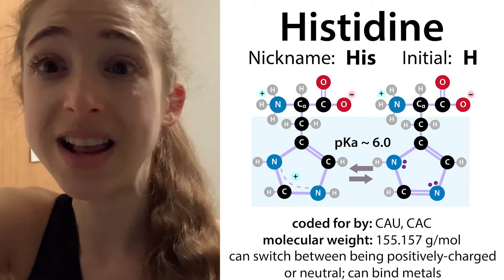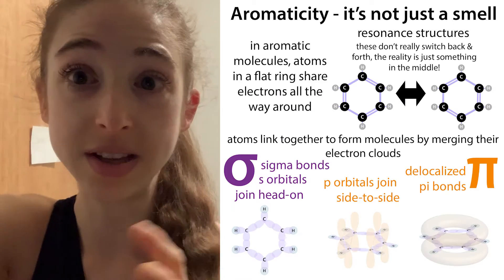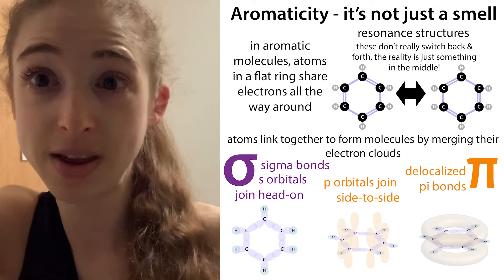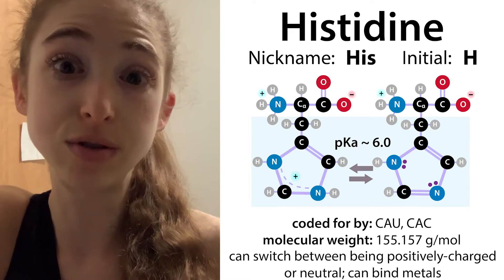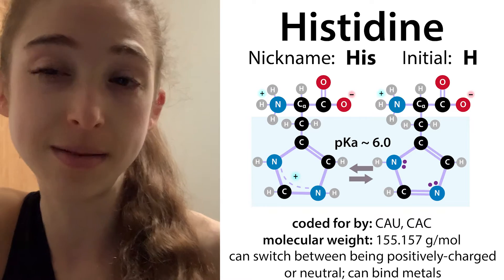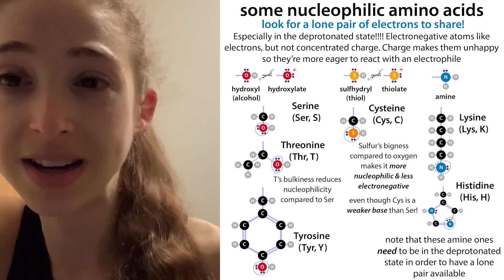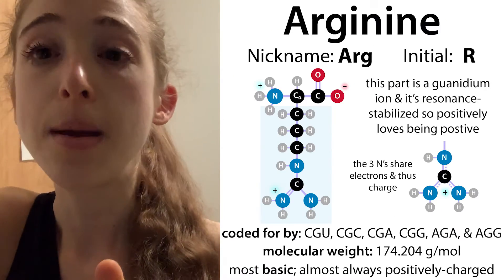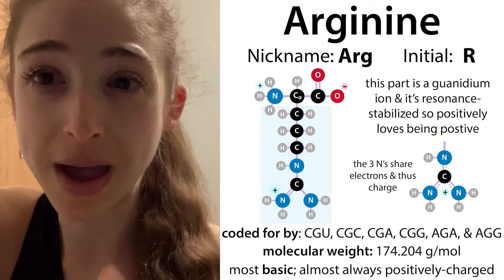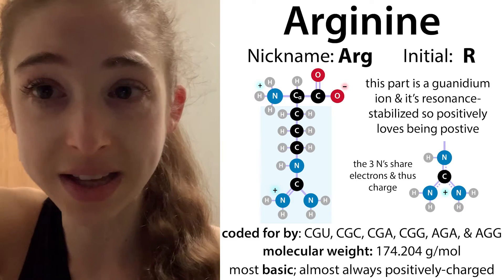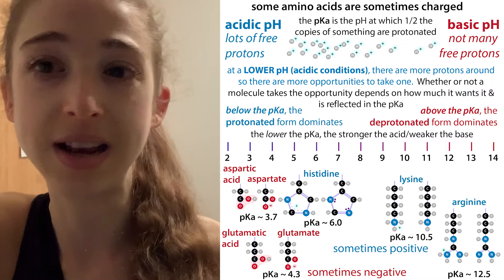With histidine, it's actually deprotonated most of the time because you have the ring of histidine — its aromaticity is kind of drawing electrons away from that proton, making it easier to pull off. So histidine is able to go back and forth between protonated and deprotonated most easily. Lysine, you're almost always going to find it protonated, but it can be deprotonated and thus act as a nucleophile. But arginine, almost always going to be positively charged because it really likes that resonance.